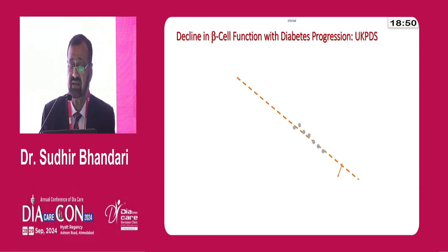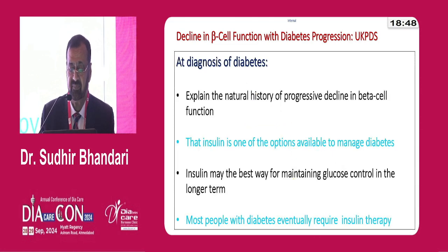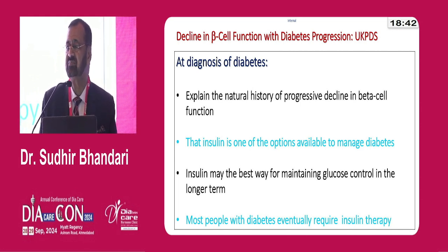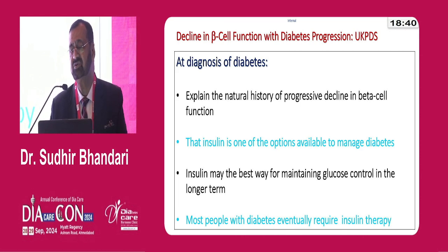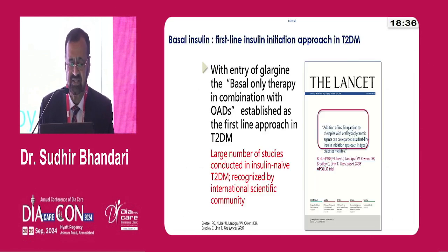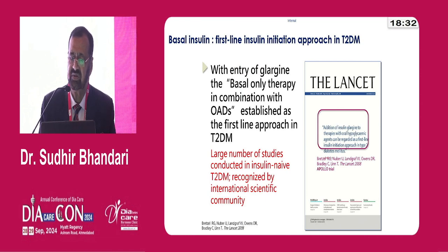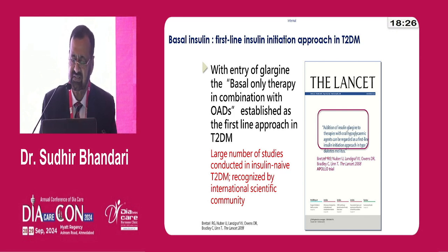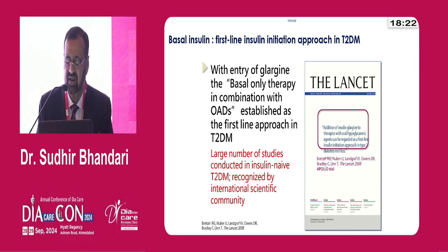Declining beta cell mass marks the progression of diabetes, which has been very well documented by UKPDS. Insulin becomes the best way to manage the insulin-deficient stage of diabetes to prevent complications and bad outcomes. Basal insulin is the first-line insulin initiation approach in type 2 diabetes — basal-only therapy in combination with oral anti-diabetic drugs establishes this first-line approach, well documented everywhere.